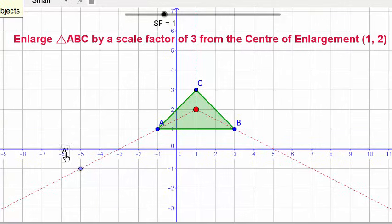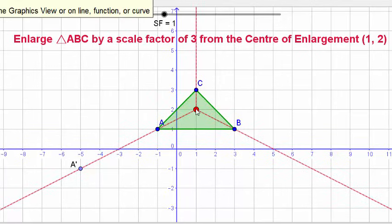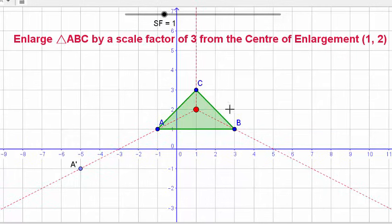Next point, B is two across and one down. Multiply that by three - it's going to be six across, two, four, six, and three down, which goes there. Label that B dash.